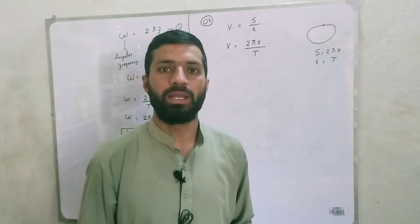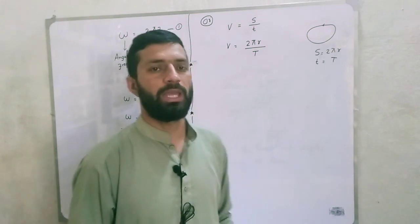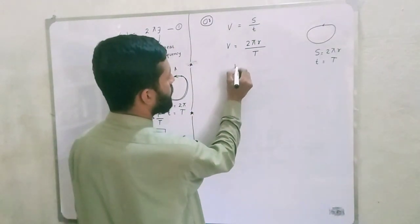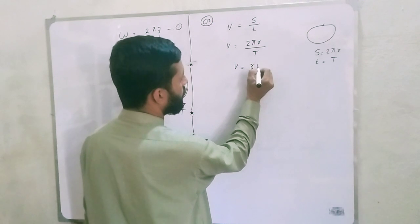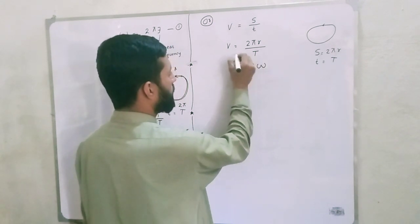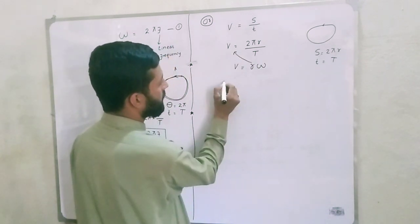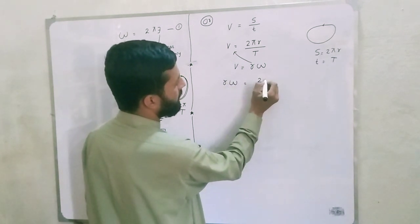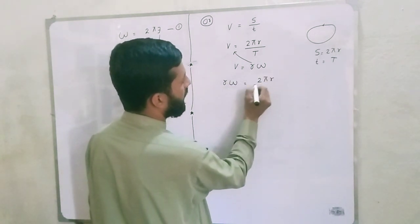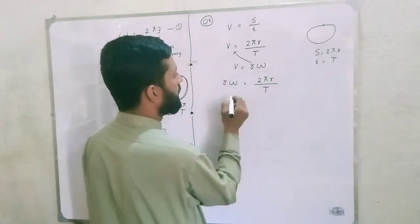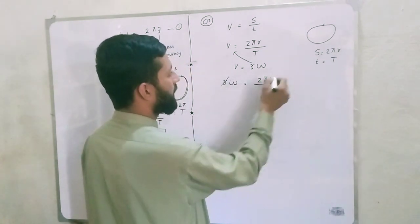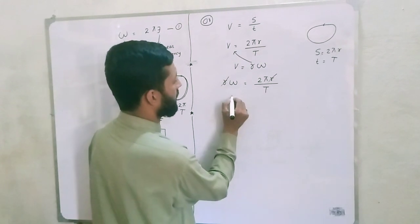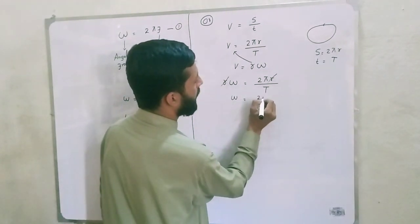So v equals 2 pi r divided by capital T. From the relation between linear and angular velocity, we have v equals r omega. Substituting, r omega equals 2 pi r divided by T. The r cancels, and 1 over T equals f, so omega equals 2 pi f. Proved again.